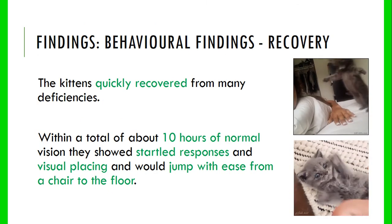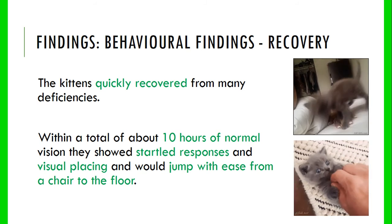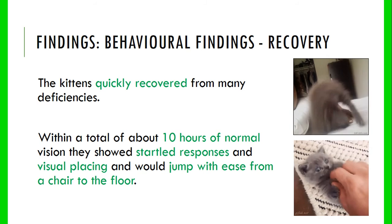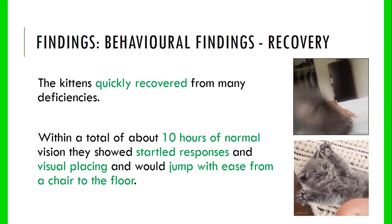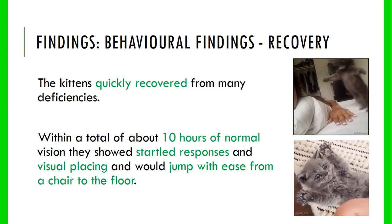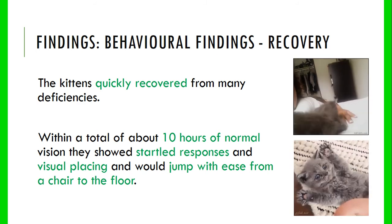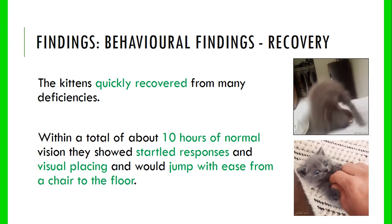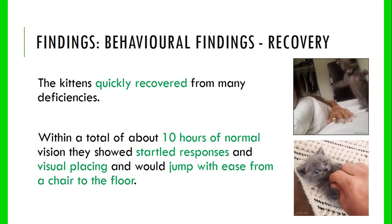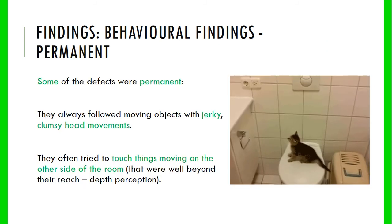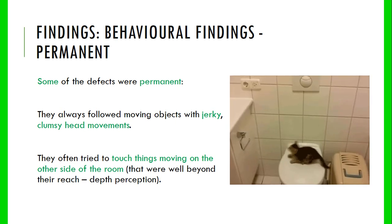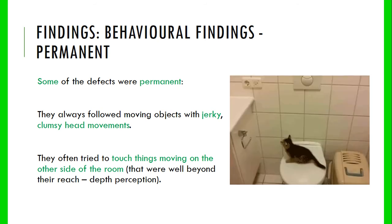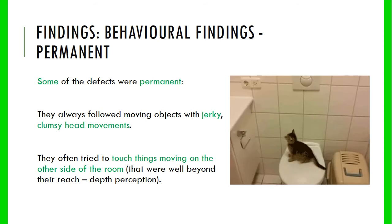Some effects were temporary: within about 10 hours in the normal illuminated environment, kittens started to show a startle response, showed visual placing, and would jump from a chair to the floor with ease. However, some effects were permanent — they always followed moving objects with jerky, clumsy head movements and would try to touch things moving on the other side of the room, well beyond their reach, showing that their depth perception was permanently affected.